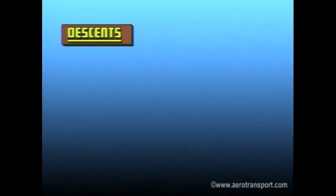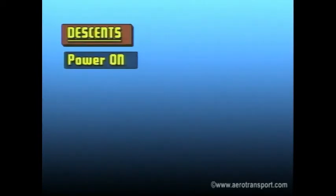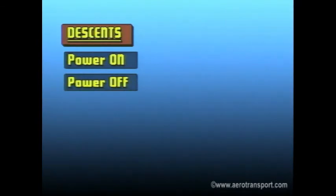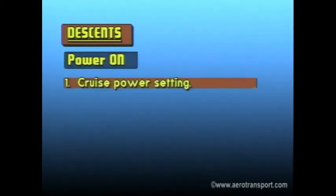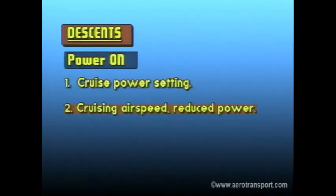The next procedure you'll be shown is descending. There are two major groups of descents: power on, or power-assisted descents, and power off, or glide descents. These can be categorized further. There are four types of power-on descents: descents at cruise power setting; descents at cruising airspeed with power reduced to maintain a rate of descent; descents at reduced airspeed and reduced power settings to maintain a rate of descent and airspeed.